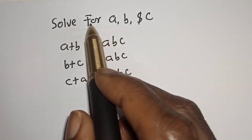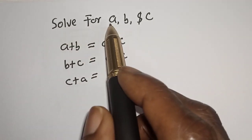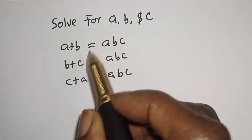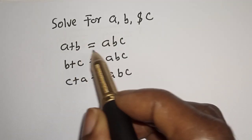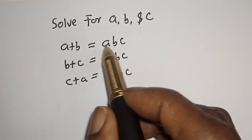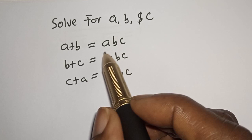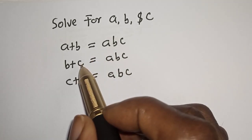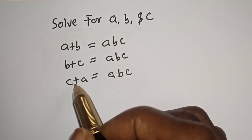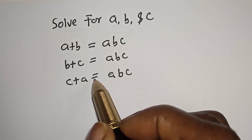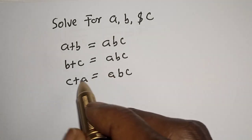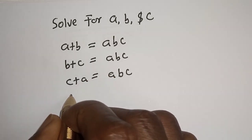Hello, welcome to Magis. How to solve for a, b, and c from this given algebra problem: a plus b is equal to abc, b plus c is equal to abc, and c plus a is equal to abc. Solution.